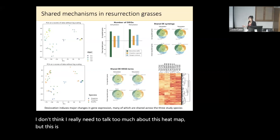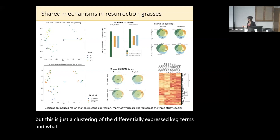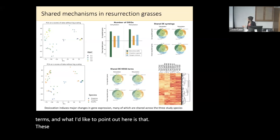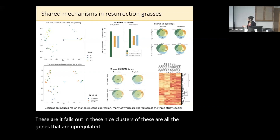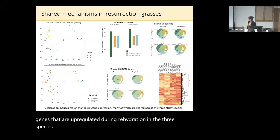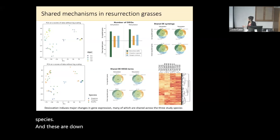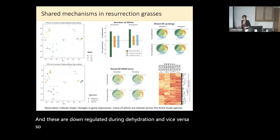This heatmap shows a clustering of the differentially expressed KEGG terms. It falls out in nice clusters — these are all the genes upregulated during rehydration in the three species, and these are downregulated during dehydration and vice versa. So we really are seeing evidence that there are shared patterns across these three grasses.